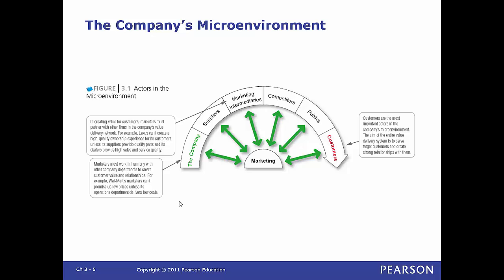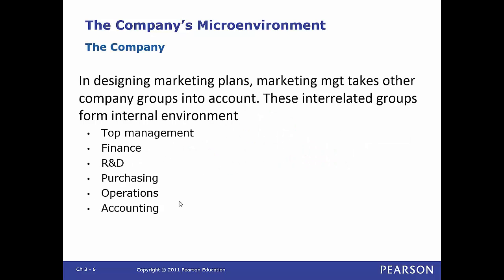The relationships between departments — human resources, finance, marketing — are important factors that influence company objectives. The company's top management, finance, research and development, purchasing, operations, and accounting all affect company strategy, so the marketing department must analyze them.